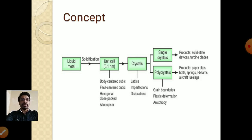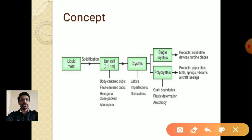The unit cell may have any type of shape — body centered cubic, face centered cubic, hexagonal close packed — or there may be allotropism, meaning different kinds of cubic cells. Unit cells then come together to form crystals, and these crystals can be used to manufacture products. You can use a crystal as a single crystal or as a polycrystal.